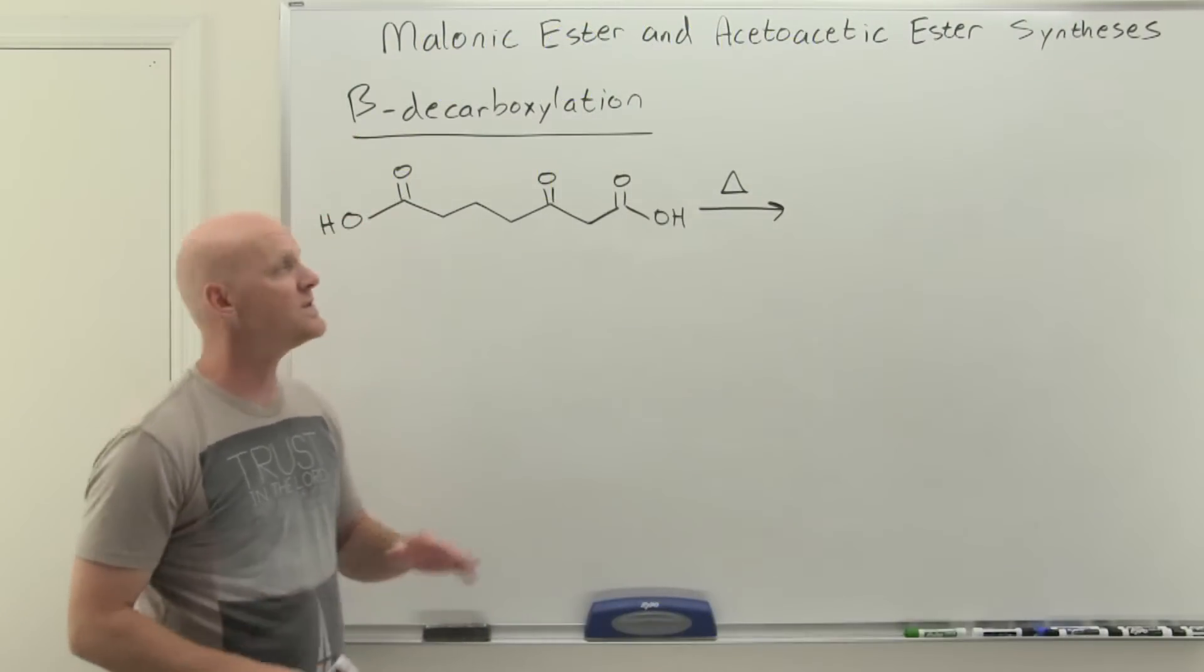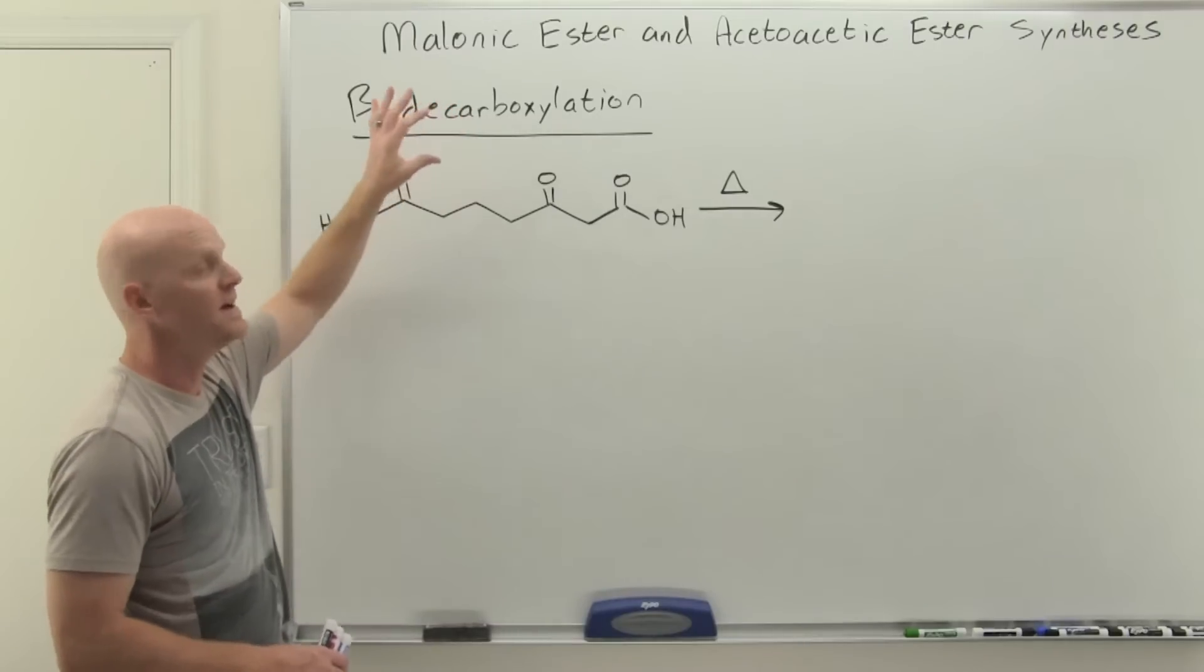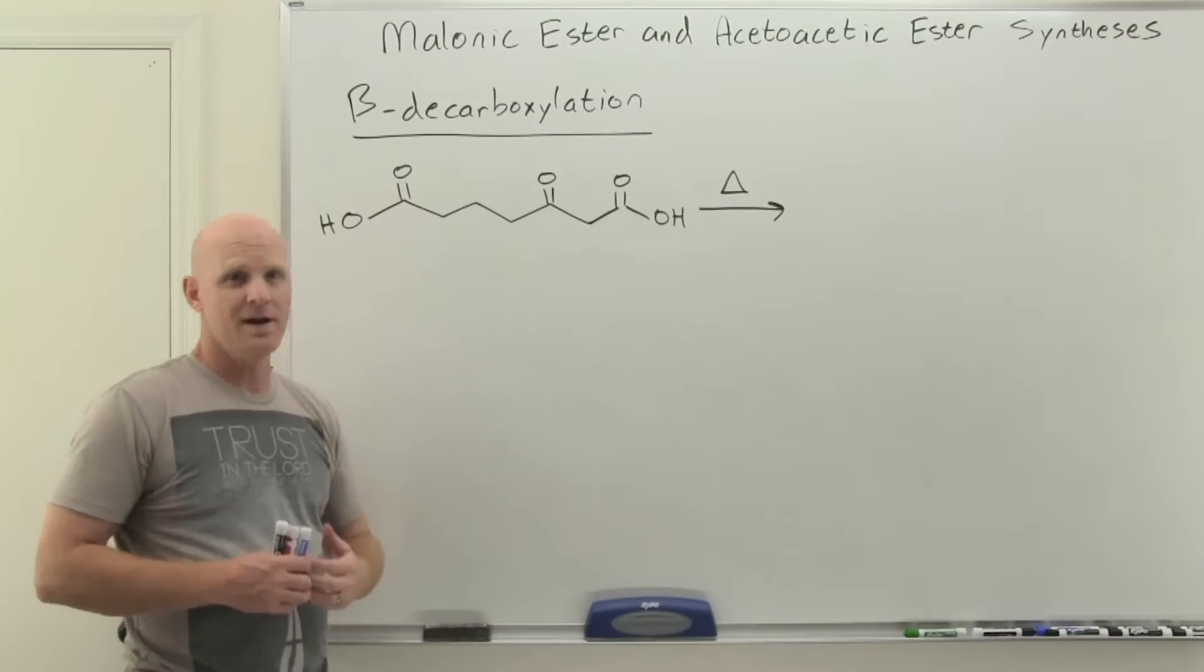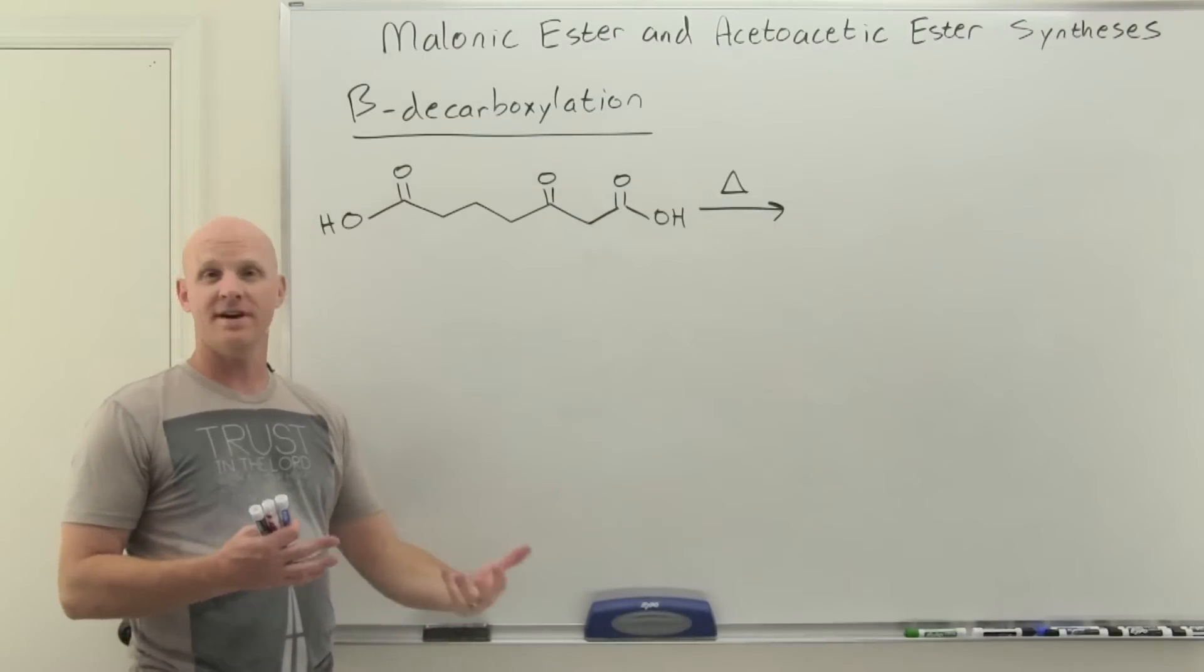We're going to start with beta decarboxylation here. In a beta decarboxylation reaction, we lose a carboxyl group, a carboxylic acid group, and it's lost as carbon dioxide.